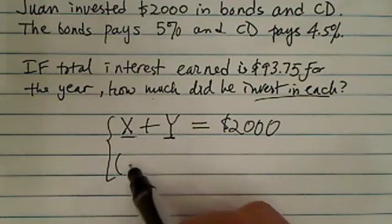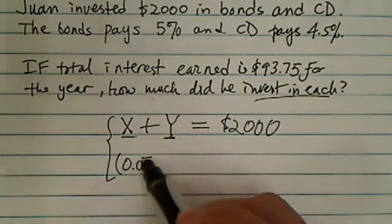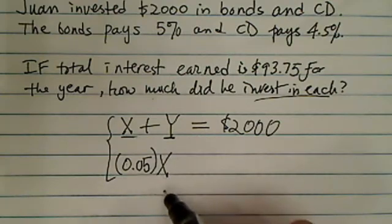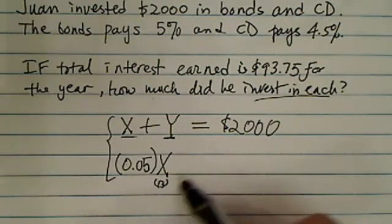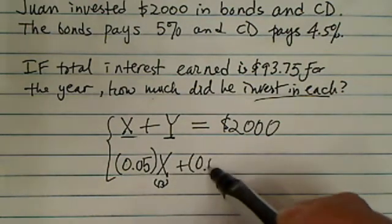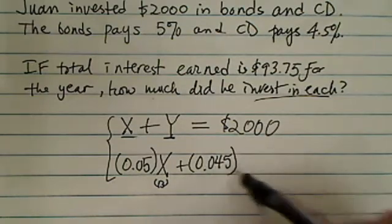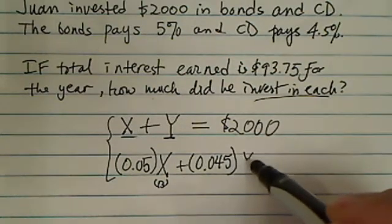well each one of them earns different interest, 0.05, now that's 5%. That goes down to the bonds, we'll put the bonds here, and then 0.045, they don't pay a lot of interest for the CDs. Let's call that